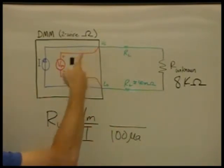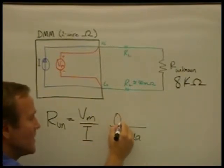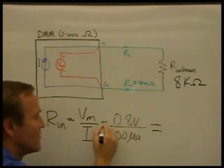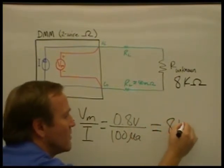When we make our measurement, since our lead resistance is small, it will be approximately 0.8 volts. And therefore, you can calculate that the resistance is approximately 8k ohms.